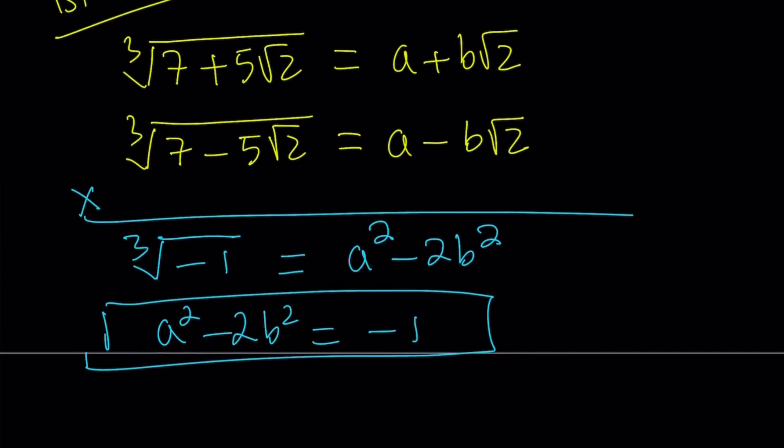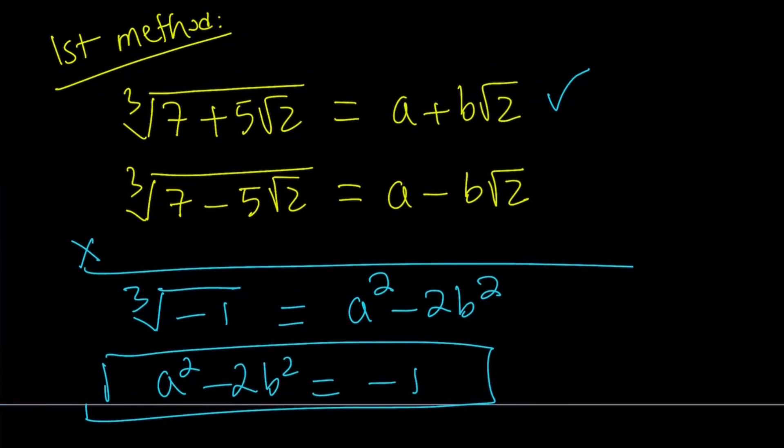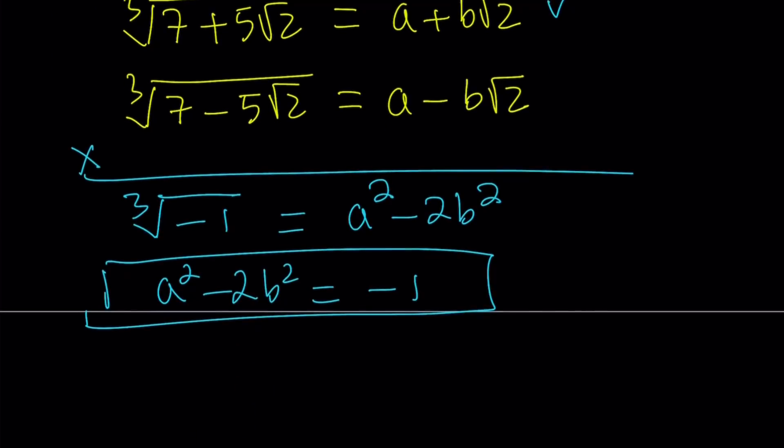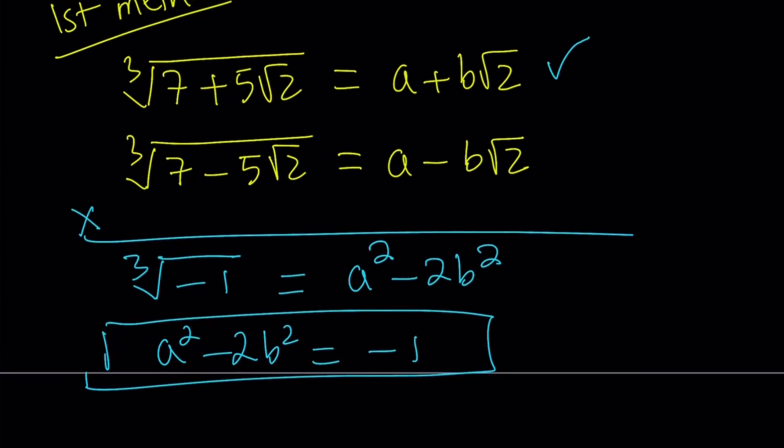And then the second equation is going to come from cubing one of these. Now there's an alternative method to the first one which I'm not going to show you because that's kind of time consuming and you can definitely do it for yourselves. But if you cube both of these equations and work with that you don't have to multiply these together. You're going to be working with homogeneous system, a cubic homogeneous system and you can solve it by making some substitutions. I'll cube the first one. So I'm going to cube this first equation that's going to give me 7 plus 5 root 2 equals a plus b root 2 cubed.